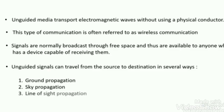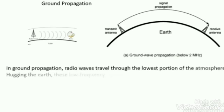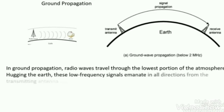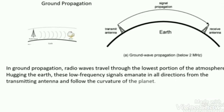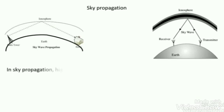Unguided signals can travel from source to destination in three ways. The first is ground propagation. In ground propagation, signals transmitted from the antenna spread only through the lowest part of the atmosphere. Radio waves travel through the lowest portion of the atmosphere, so it supports only low frequency signals. The signals can emanate in all directions from the antenna. Signal travel distance depends on power — greater power increases the distance.